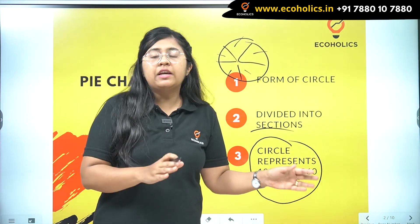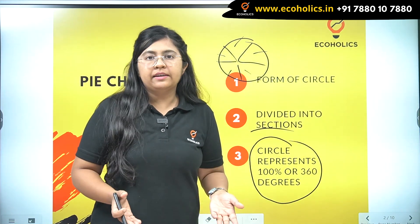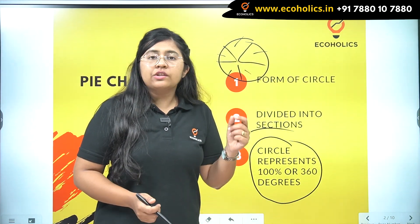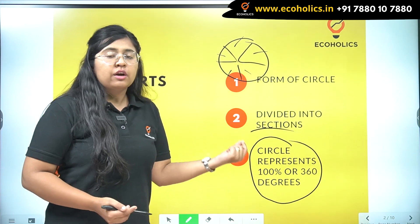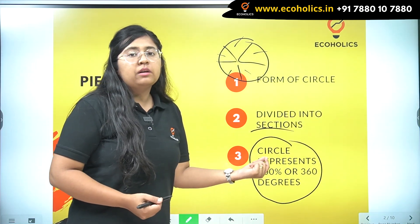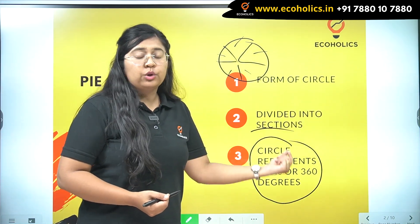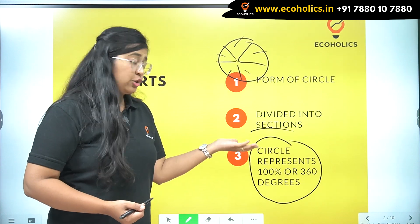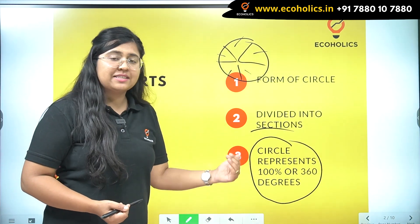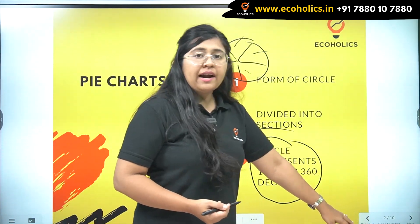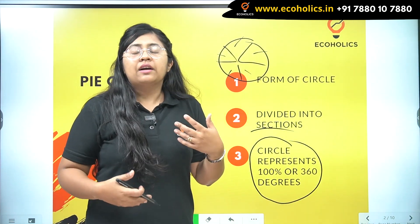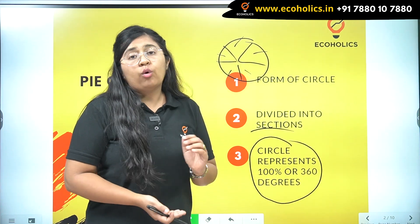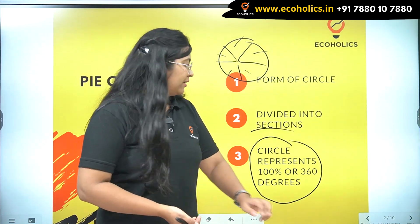So 360 degrees represents the full circle, and that equates to 100 percent when we convert it into numerical data. This is very useful information that will be used when we solve the conversions. Now let's look at different kinds of pie charts and also understand what a donut chart is.